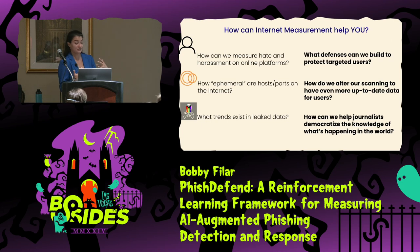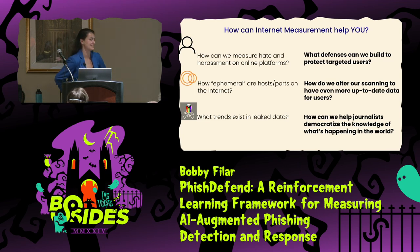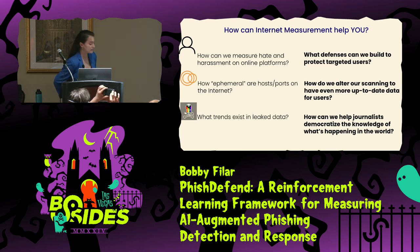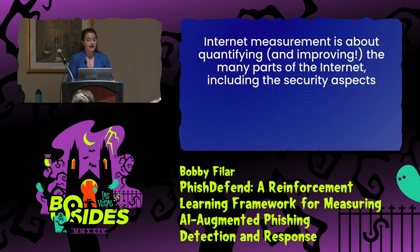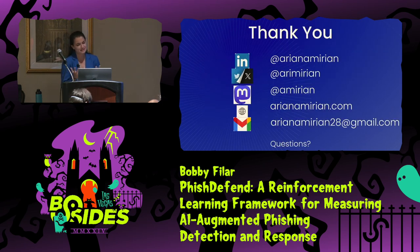Let's recap. I went over three very different projects that all fall under the umbrella of internet measurement. The first looked at attacker behavior to figure out what defenses we could build. The second looked at internet-wide scanning data compared to other scan data to figure out how we could get better. The third was a mixed-methods study to improve vulnerability notifications and specifically vulnerability remediation at a spread-out IT organization. What I'm hoping you take away is that internet measurement is a tool for security research, but you can also employ this in your own organizations. There are totally different areas — measuring hate and harassment on online platforms, understanding how ephemeral hosts are on the internet to better update scanning data, or analyzing trends in leaked data to help journalists democratize knowledge. You can think about measurement quantitatively or qualitatively. Internet measurement is about quantifying and improving the many parts of the internet, including security, and it can be a tool for everyone.